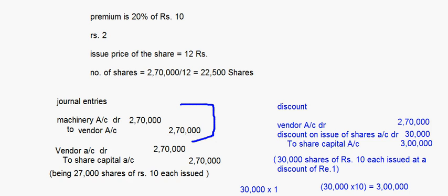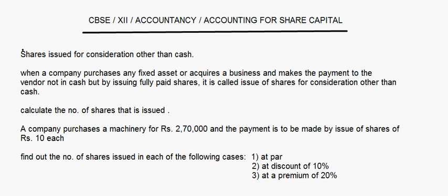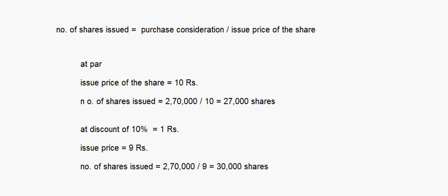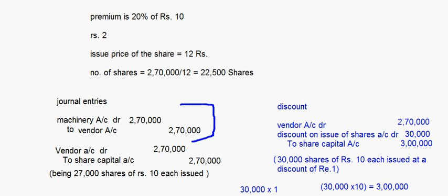So first we calculate the number of shares issued using the purchase consideration, then we pass the journal entries accordingly. Now there can be questions where part of the amount is paid in cash and the balance is settled by issuing shares.